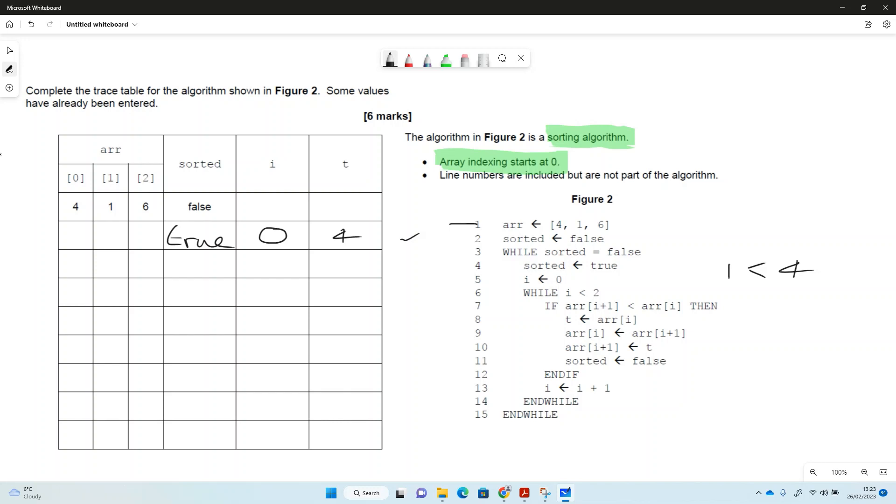And then array[i] gets array[i+1]. Remember i is still 0, so array[i] gets array[i+1] which is 1 just there. Then array[i+1] gets t, so that's 4 just there. We switch those two numbers around, so sorted becomes false again.